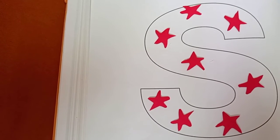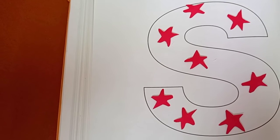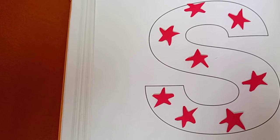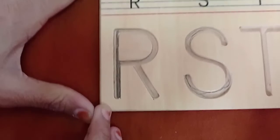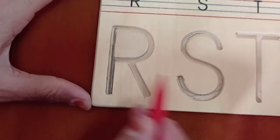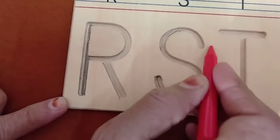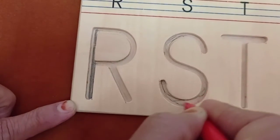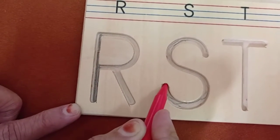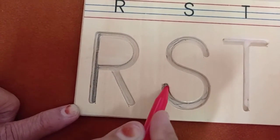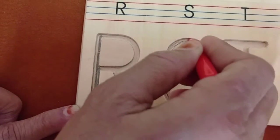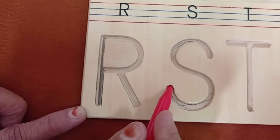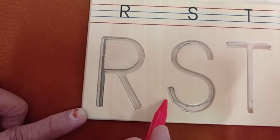We will perform one more activity. That is tracing activity. I will show you how to trace letter S. Take a curve like this and turn it like this. Which letter is this? S. One more time I am going to trace this letter. Which letter is this? S.